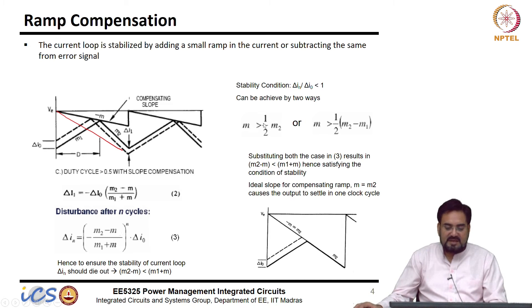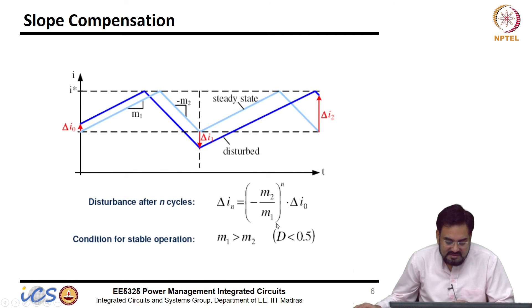And, other case could be like if you keep M1 greater than M2 by 2, then again you will see this numerator will always remain less than that one. But, this is a more ideal case where you can get a much accurate value of M.